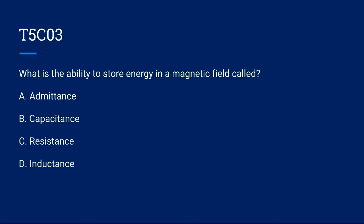T5C03: What is the ability to store energy in a magnetic field called? A. Admittance, B. Capacitance, C. Resistance, or D. Inductance. Correct answer is D. Inductance.